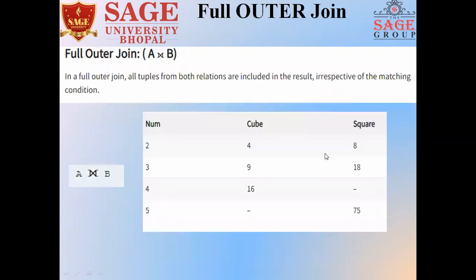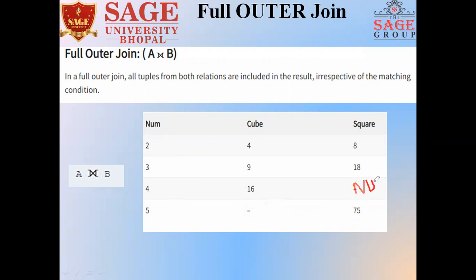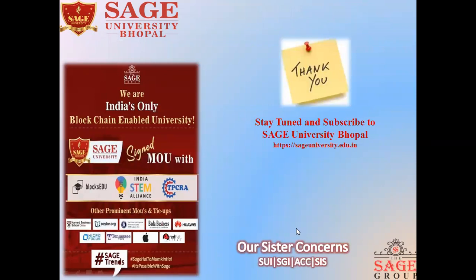In the full outer join, we include all the tuples associated with the first relation as well as the second relation. Here we have all the values: 2, 3, and 4 were associated with the first relation, and 5 was uncommon between the two relations — it is also kept here. The missing values are replaced by null. Now I think you are all aware of the join operations in relational algebra in the subject DBMS, database management system. Thank you all.